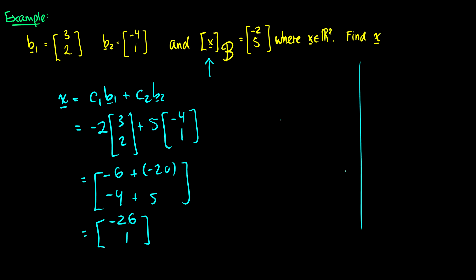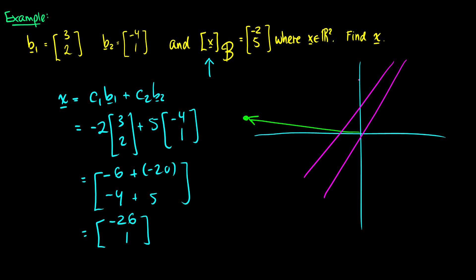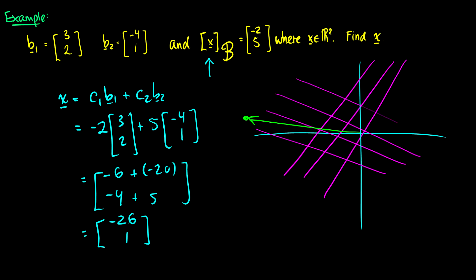If we draw the R2 plane, this vector looks a certain way in standard coordinates. But in basis b, with b1 = (3, 2) going in one direction and b2 = (-4, 1) going in another — forming a non-standard grid — the vector is represented as -2 in the b1 direction and 5 in the b2 direction. So you can visually draw this if needed.